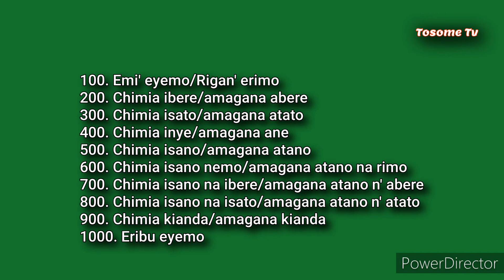CHIMI YA ISANO NEMO — that is six hundred, or AMAGANA ATANO NARIMO. Seven hundred: AMAGANA ATANO NAABERE, or you may say CHIMI YA ISANO NAIVERE. Eight hundred: AMAGANA ATANO NATATO, or CHIMI YA ISANO NAISATO. CHIMI YA KIANDA — that is nine hundred, or you may say AMAGANA KIANDA.